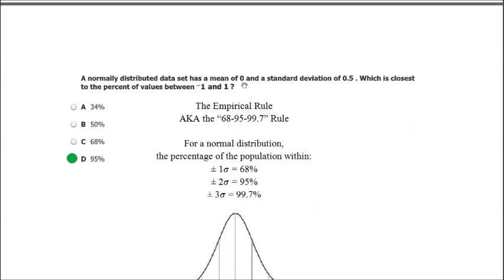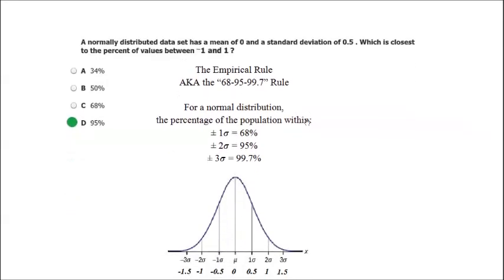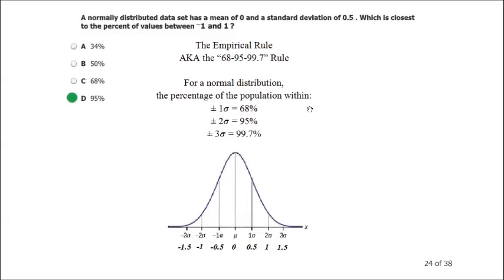Question 24. A normally distributed data set has a mean of 0 and a standard deviation of 0.5. Which value is closest to the percent of values between negative 1 and positive 1? You should remember the empirical rule, which some teachers call the 68-95-99.7 rule.